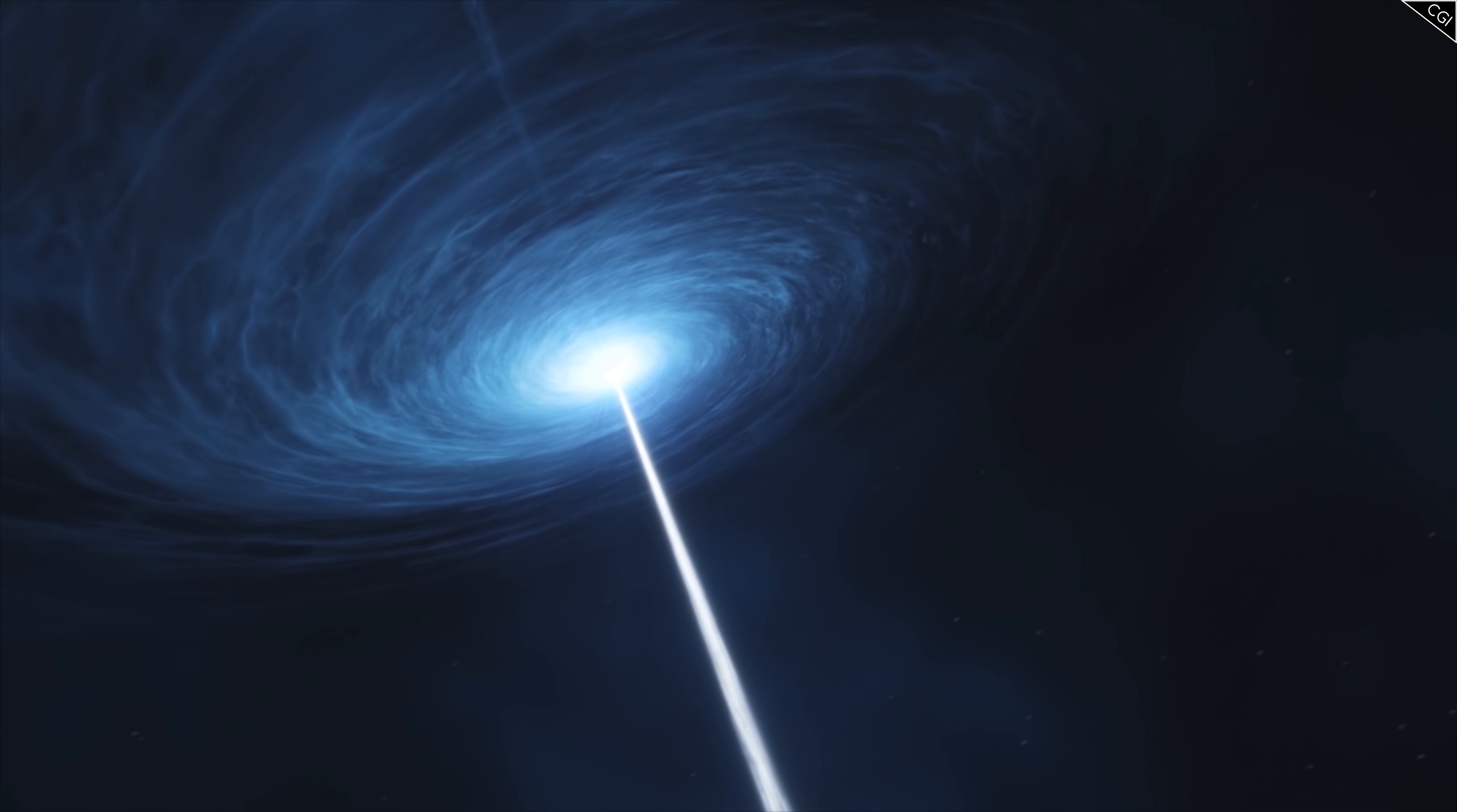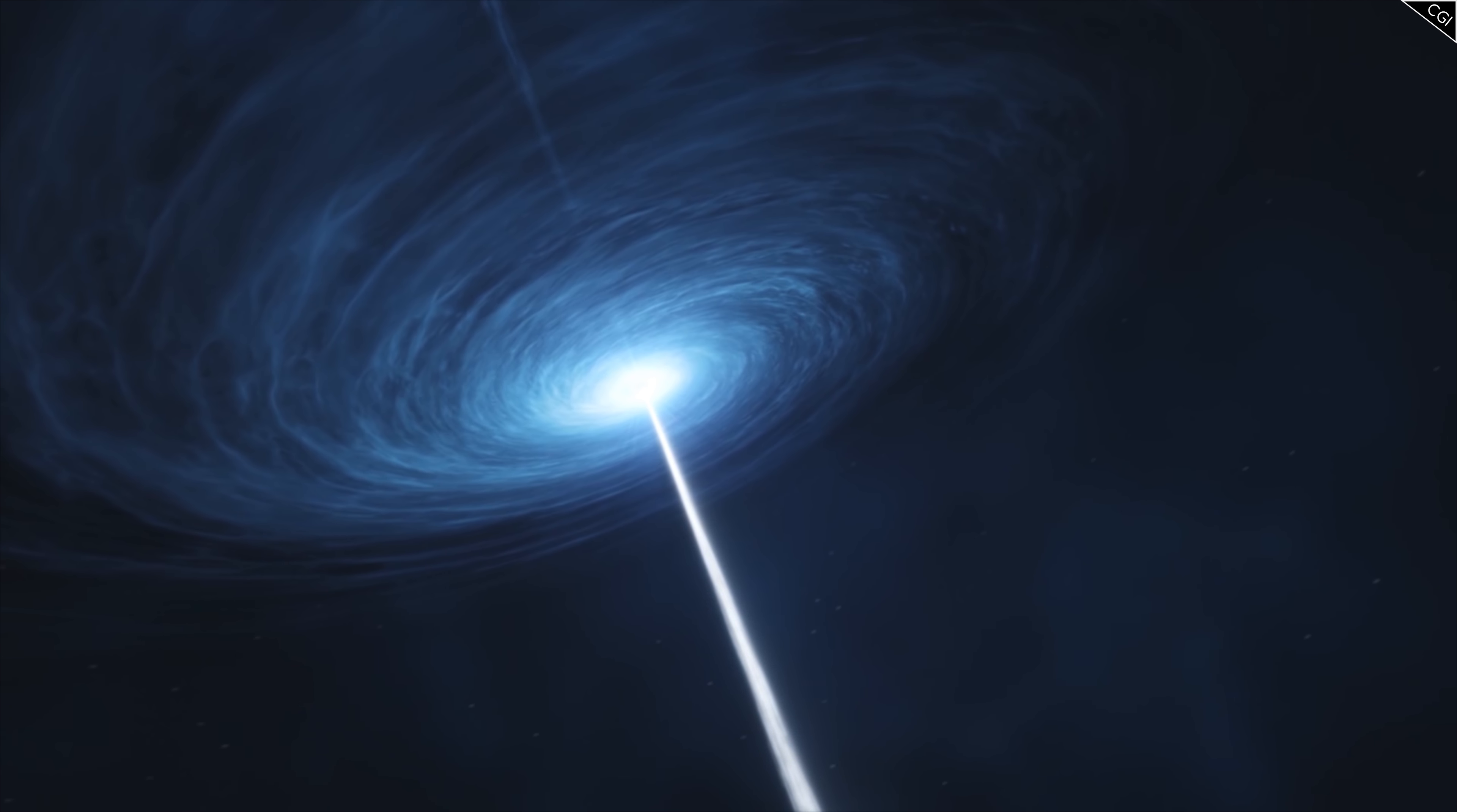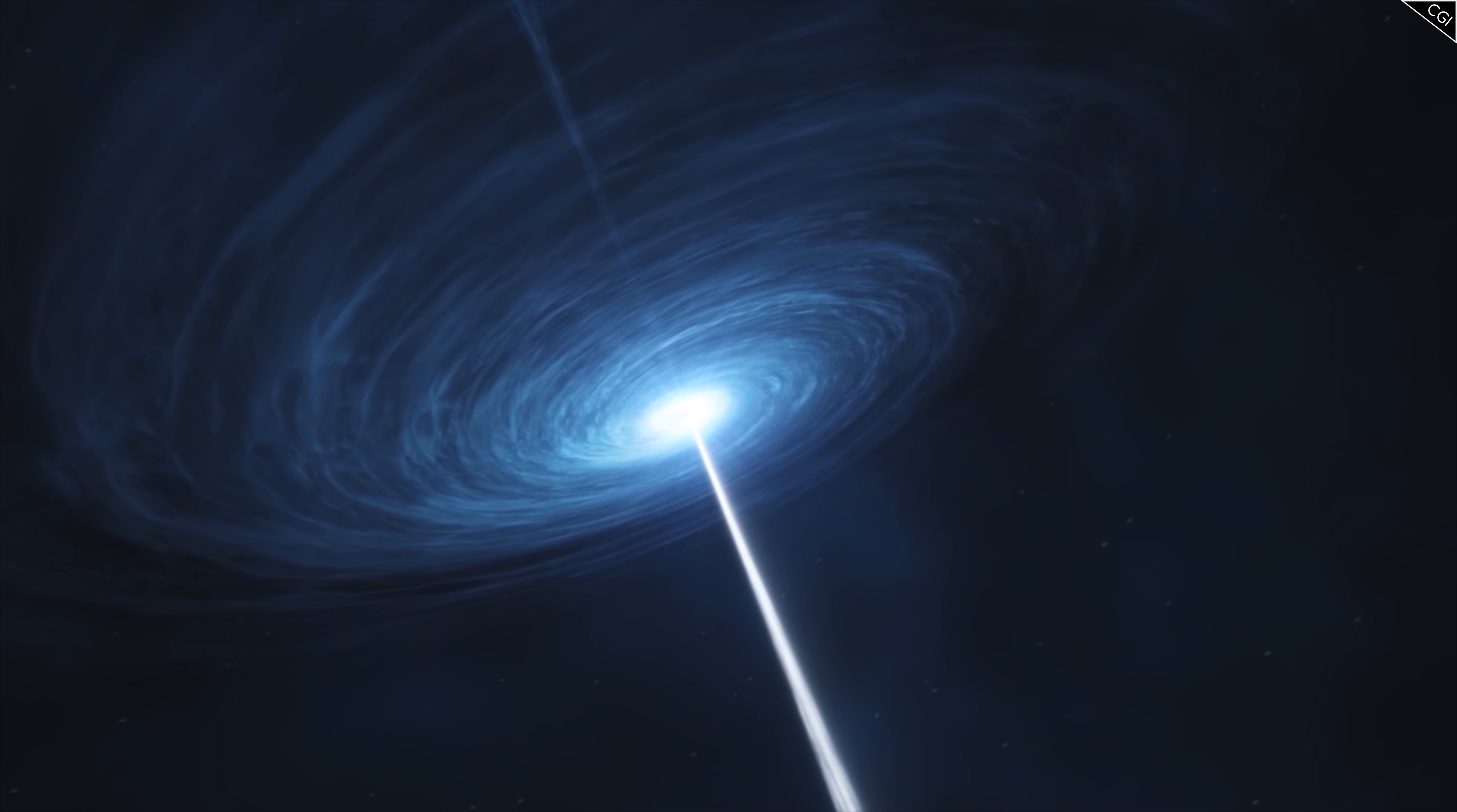Quasars themselves are bright, but when these jets are pointed towards us, they are known as blazars. The jets are believed to be powered by the black hole's magnetic structure, and they can carry high energy plasma away from the black hole at almost the speed of light.